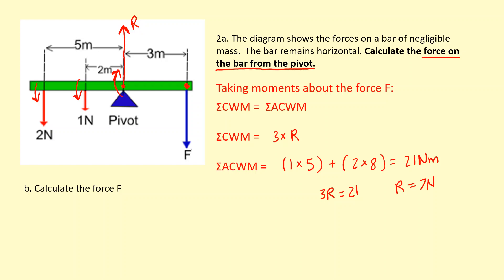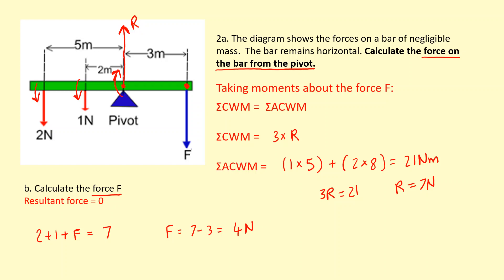Now to find F: for translational equilibrium the resultant force must equal zero, so all upward forces must equal downward forces. Therefore 2 plus 1 plus F must equal R, and we know R is 7, so F equals 7 minus 3, which gives 4 Newtons. I could have done this question by taking moments about the pivot first and would have gotten the exact same answers.